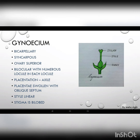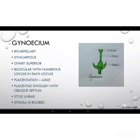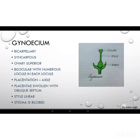Gynoecium means the female part of a flower. Bicarpellary means having two carpels. Syncarpous is the gynoecium with combined pistils. The ovary is superior, bilocular, with numerous ovules in each locule. Placentation is axile, and the placenta is swollen with an oblique septum. The style is linear and the stigma is bilobed, meaning two lobes are present.